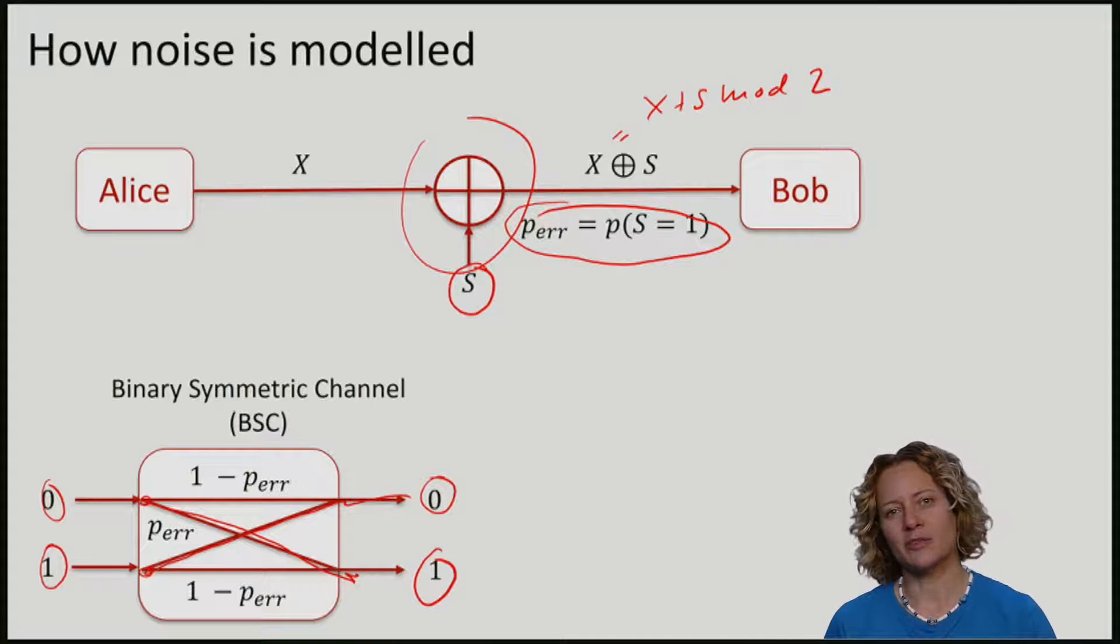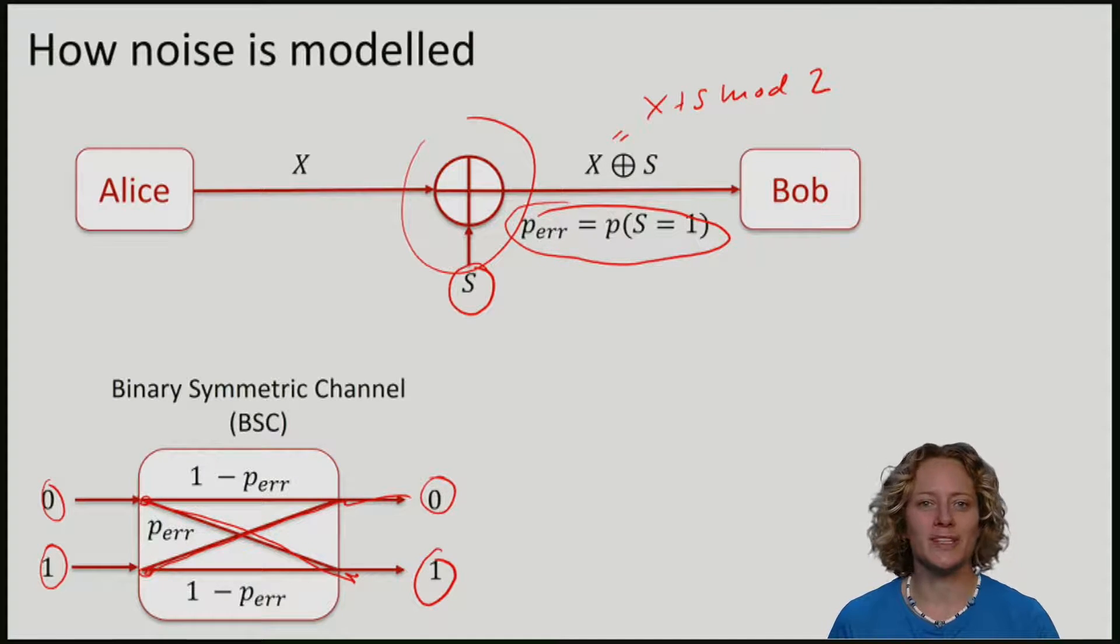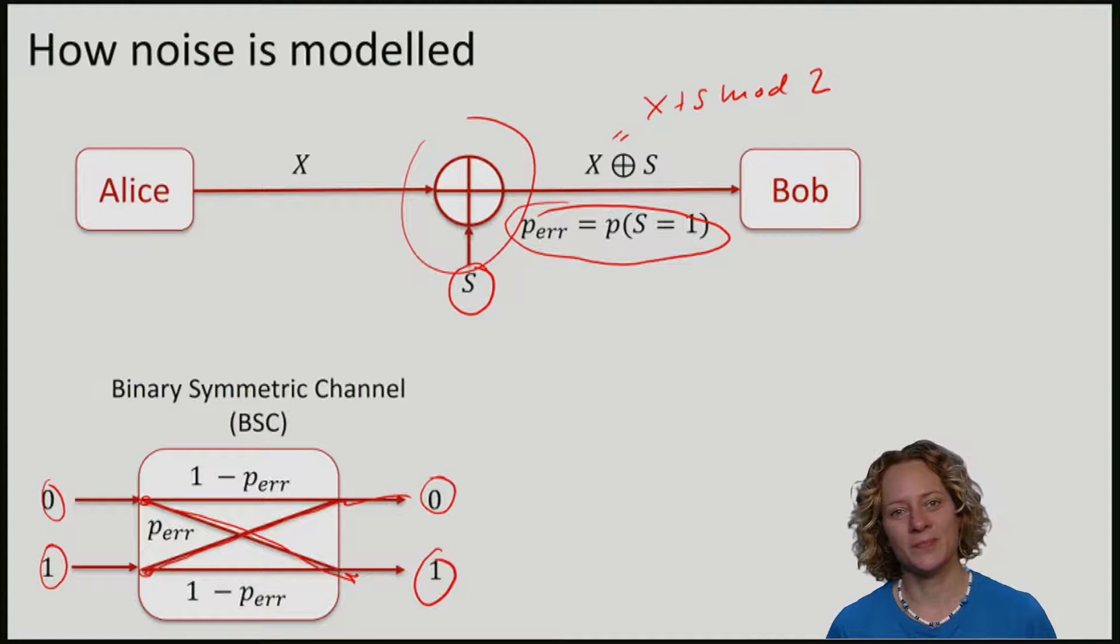This channel is called binary, because the input and output are bits. It is called symmetric, because the errors are the same no matter whether I start with a 0 or a 1.